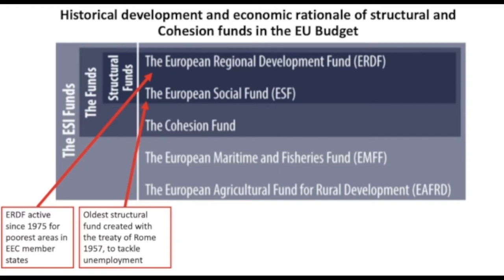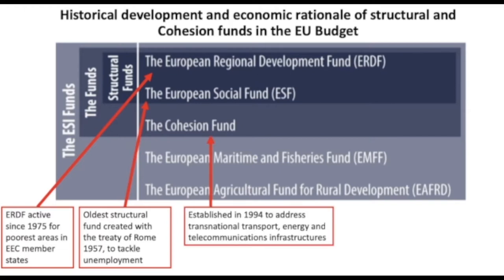The main initial beneficiaries of the ERDF were Italy and then the United Kingdom. The Cohesion Fund, established in 1994 with the entry of Spain and Portugal, was created to address infrastructural weaknesses at cross-national level. Beneficiary members are those with a GDP per capita below 90% of the EU average. It was created to address transnational transport, energy, and telecommunication infrastructures, allowing poorer regions access to national and EU central markets.